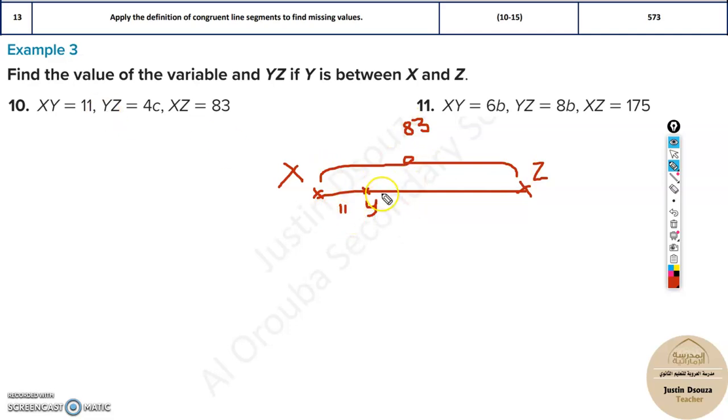Obviously, we have to find YZ. This is very straightforward to solve. It is 83 minus 11. We have done similar problems previously in the previous videos. So 83 minus 11, that will be 72.